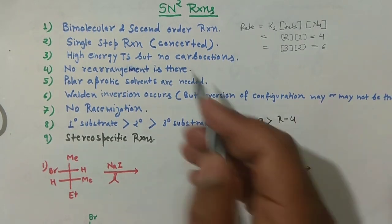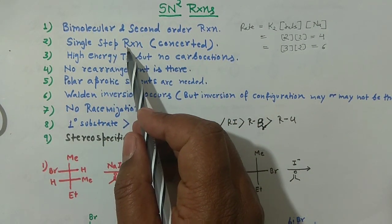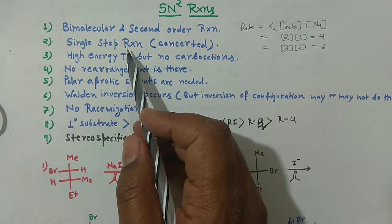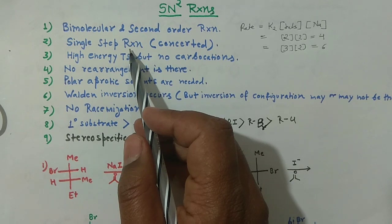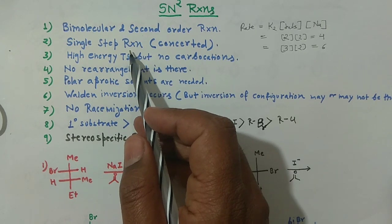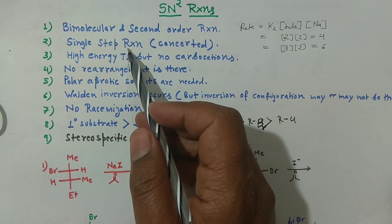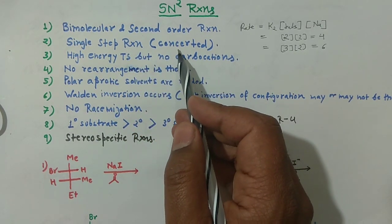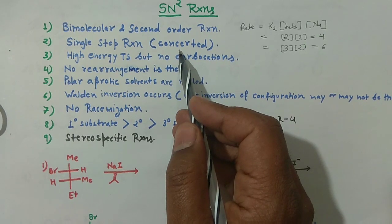The second feature is that SN2 is a single-step reaction. This means whatever new bond forms in the product and whatever old bond breaks in the reactant, both occur in only a single step. Such reactions are known as concerted reactions — reactions in which bond breaking and bond formation occur simultaneously.